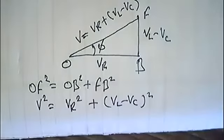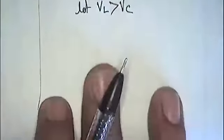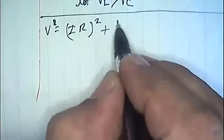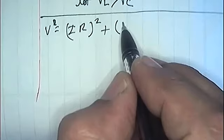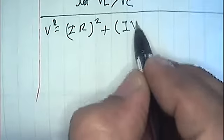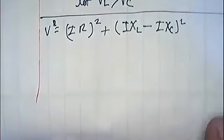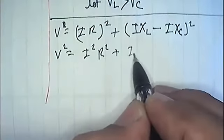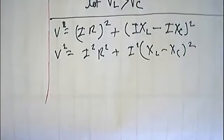Since we are treating these as vector quantities, V squared equals VR squared plus VL minus VC whole squared. VR is IR, so V squared equals I squared R squared plus I squared times XL minus XC whole squared.